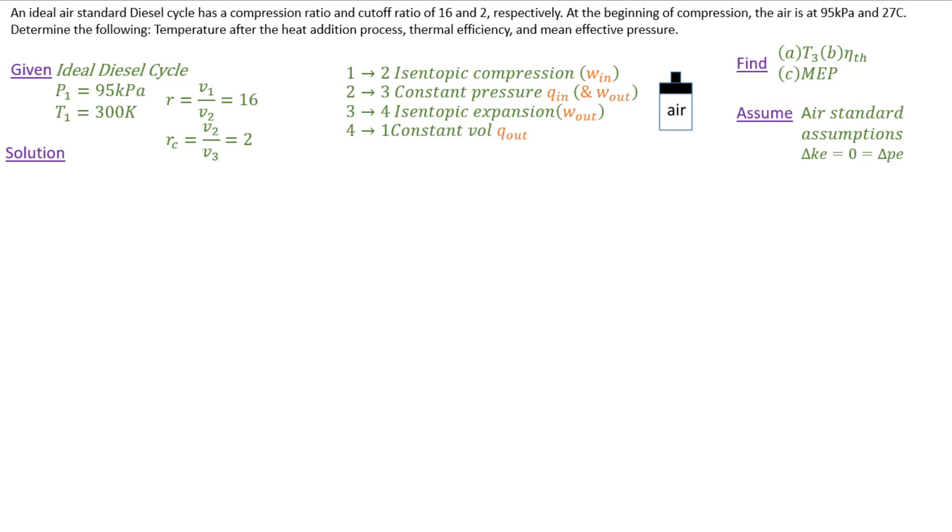All right, so we have an ideal air standard diesel cycle. We're given the cutoff ratio and the compression ratio, the conditions at the beginning of the isentropic compression process, and we want to find T3, the thermal efficiency, and the mean effective pressure.